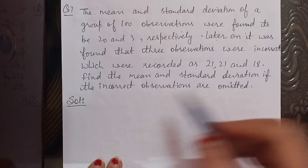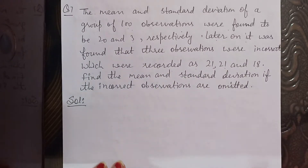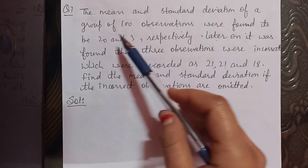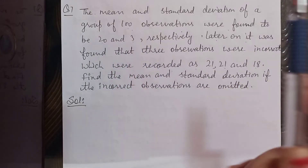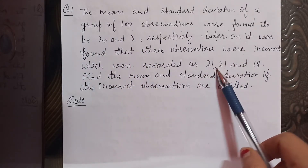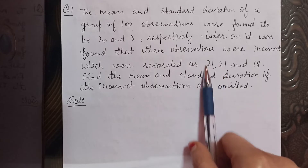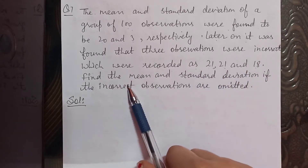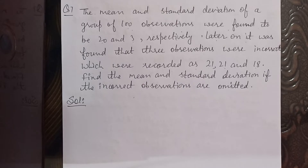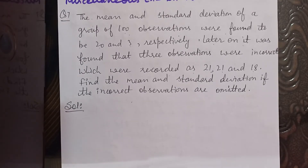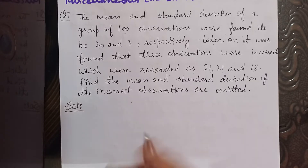Find the mean and standard deviation if the incorrect observations are omitted. So the data we have taken — mean and standard deviation of 20 and 3 — but there were 3 observations which were wrongly recorded as 21, 21 and 18. This question is similar to question 5, the same approach — there was one observation there, here there are three. So we will do it the same way. Let's start.